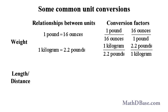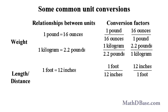In terms of length or distance, in the American-British system, 1 foot is equal to 12 inches. The two derived conversion factors are 1 foot per 12 inches, and 12 inches per foot.